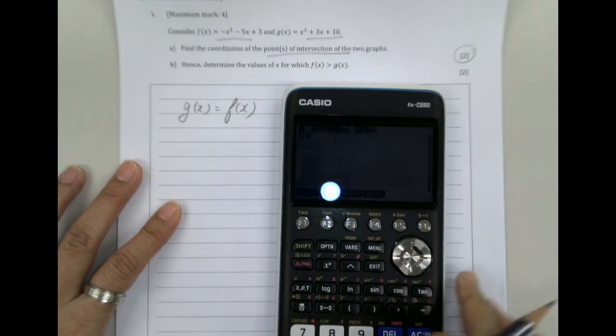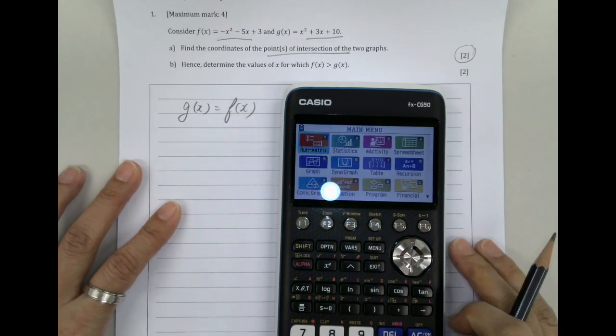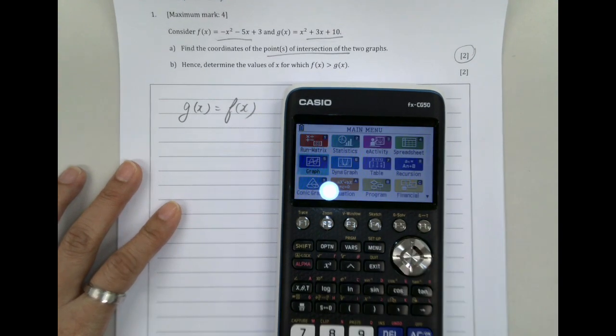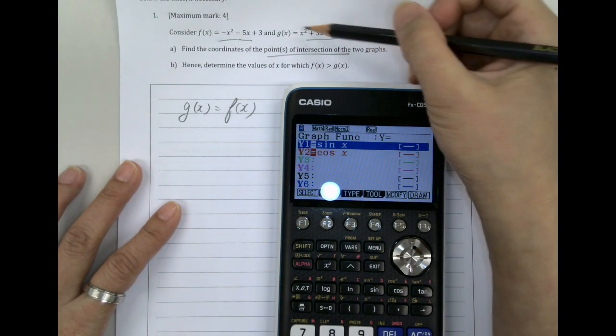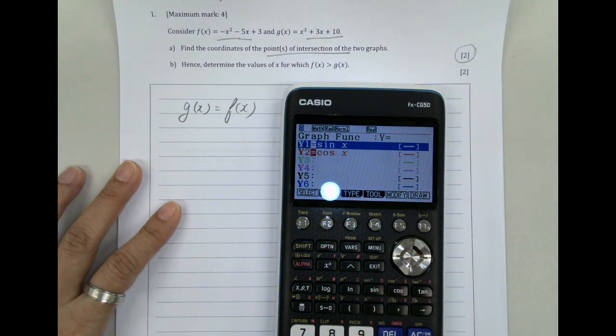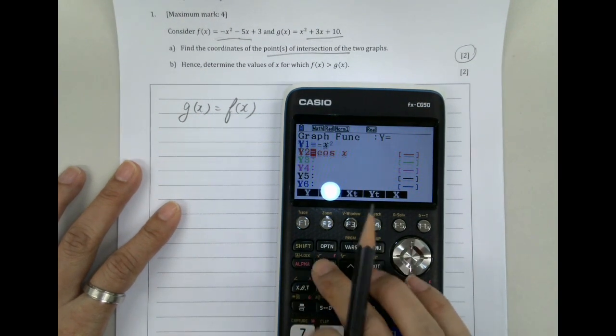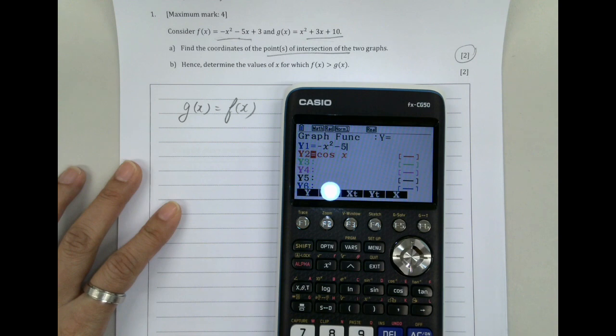You go to Menu, Graphing, and then we key in our two equations there. So we have negative x squared minus 5x plus 3, and the other one is x squared plus 3x plus 10.